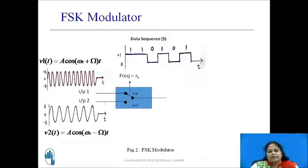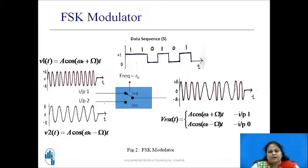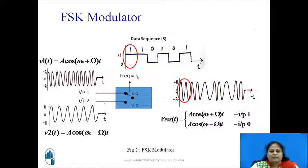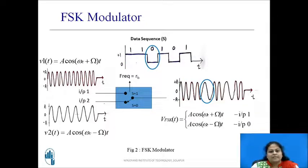The input bit stream is applied to the select pin of this multiplexer. Thus, the rate of switching of this switch is the same as the bit rate, say RB. The output of this multiplexer is simply the BFSK signal as shown in the figure. When the input is logic 1, the switch connects input 1 to the output, giving a higher frequency carrier signal V1(t) at the output during the bit slot. And when the input bit is 0, the switch connects input 2 to the output, giving a low frequency carrier V2(t) at the output during its time slot. Thus, the multiplexed output is a BFSK signal.